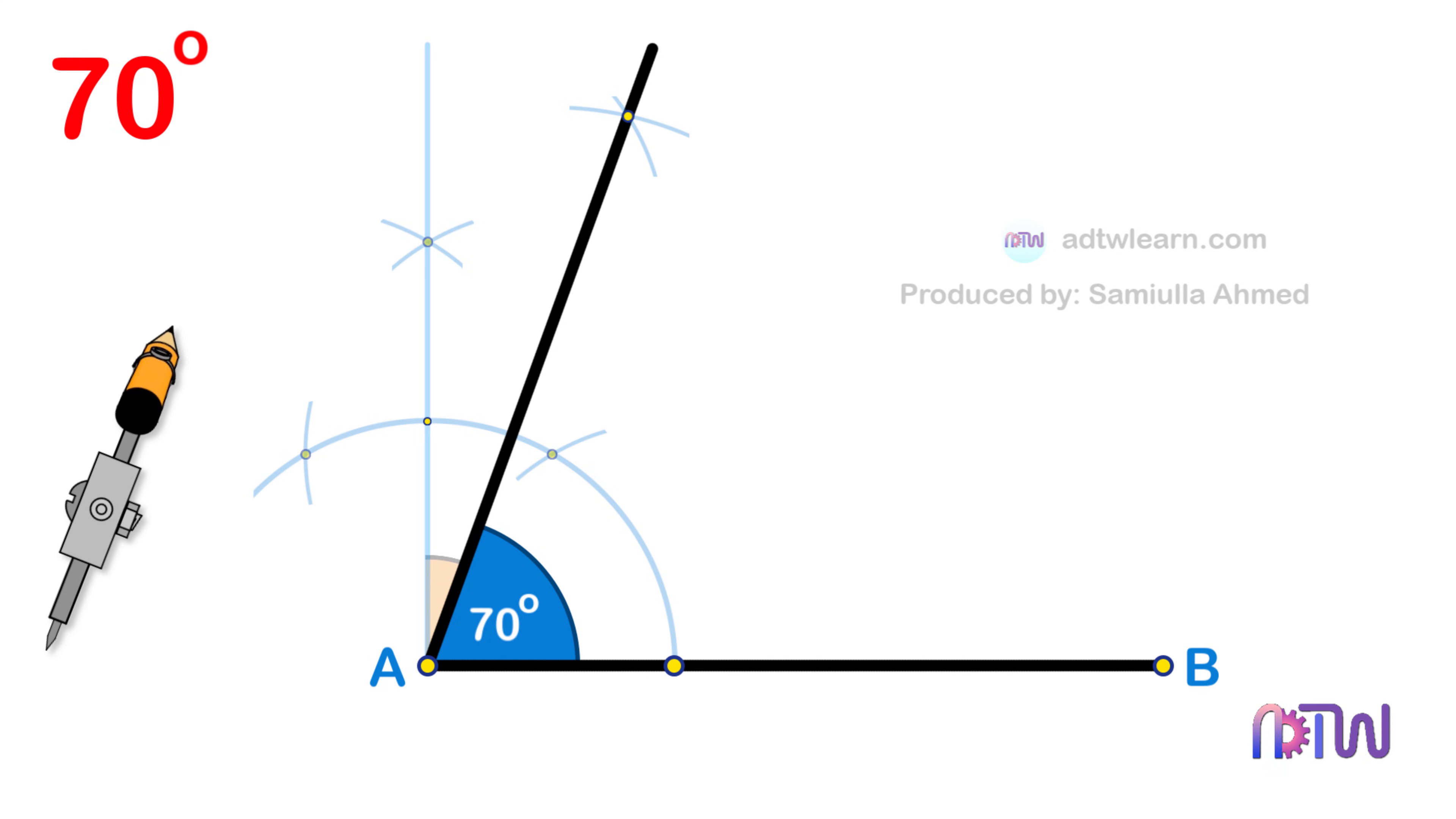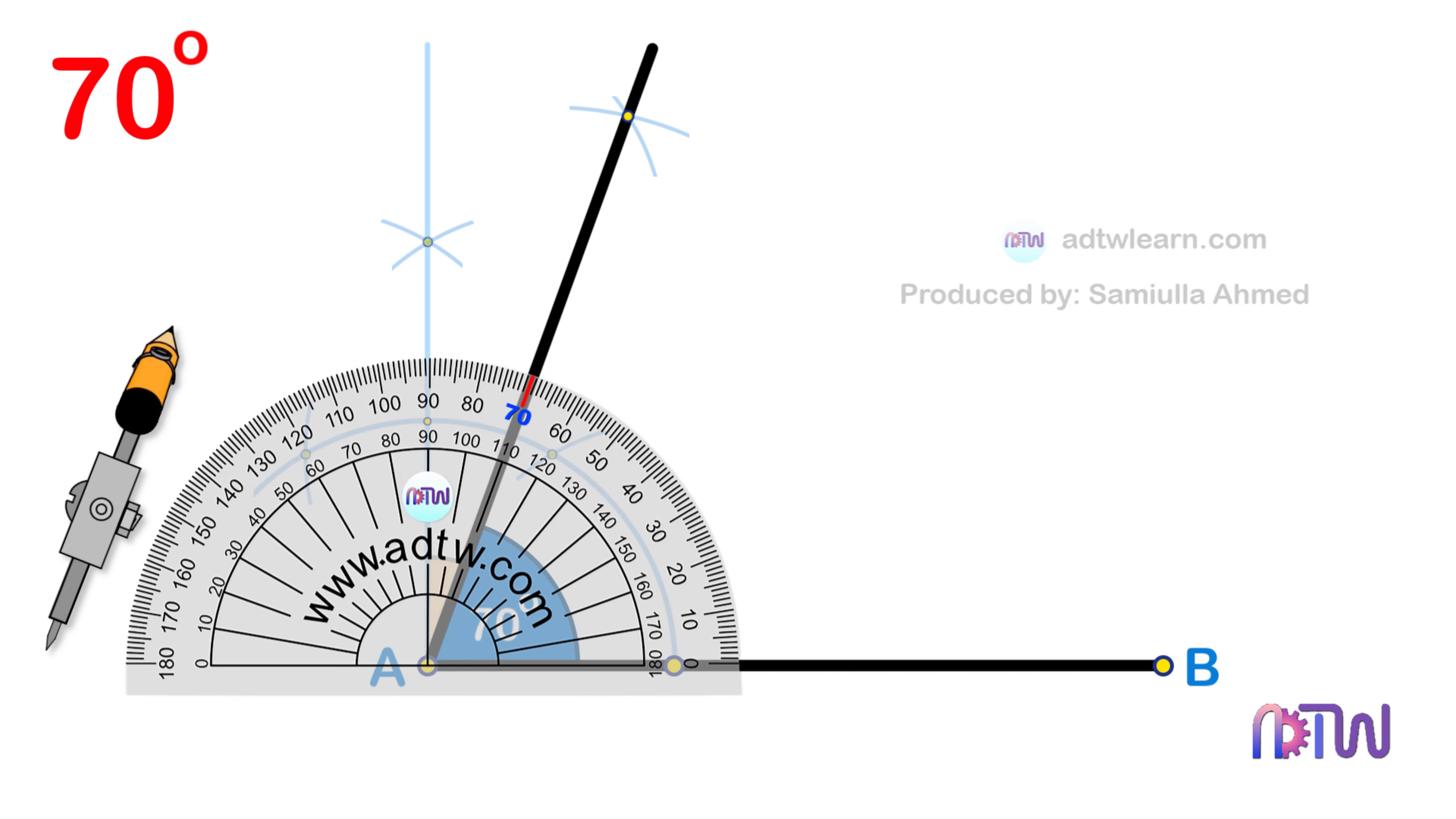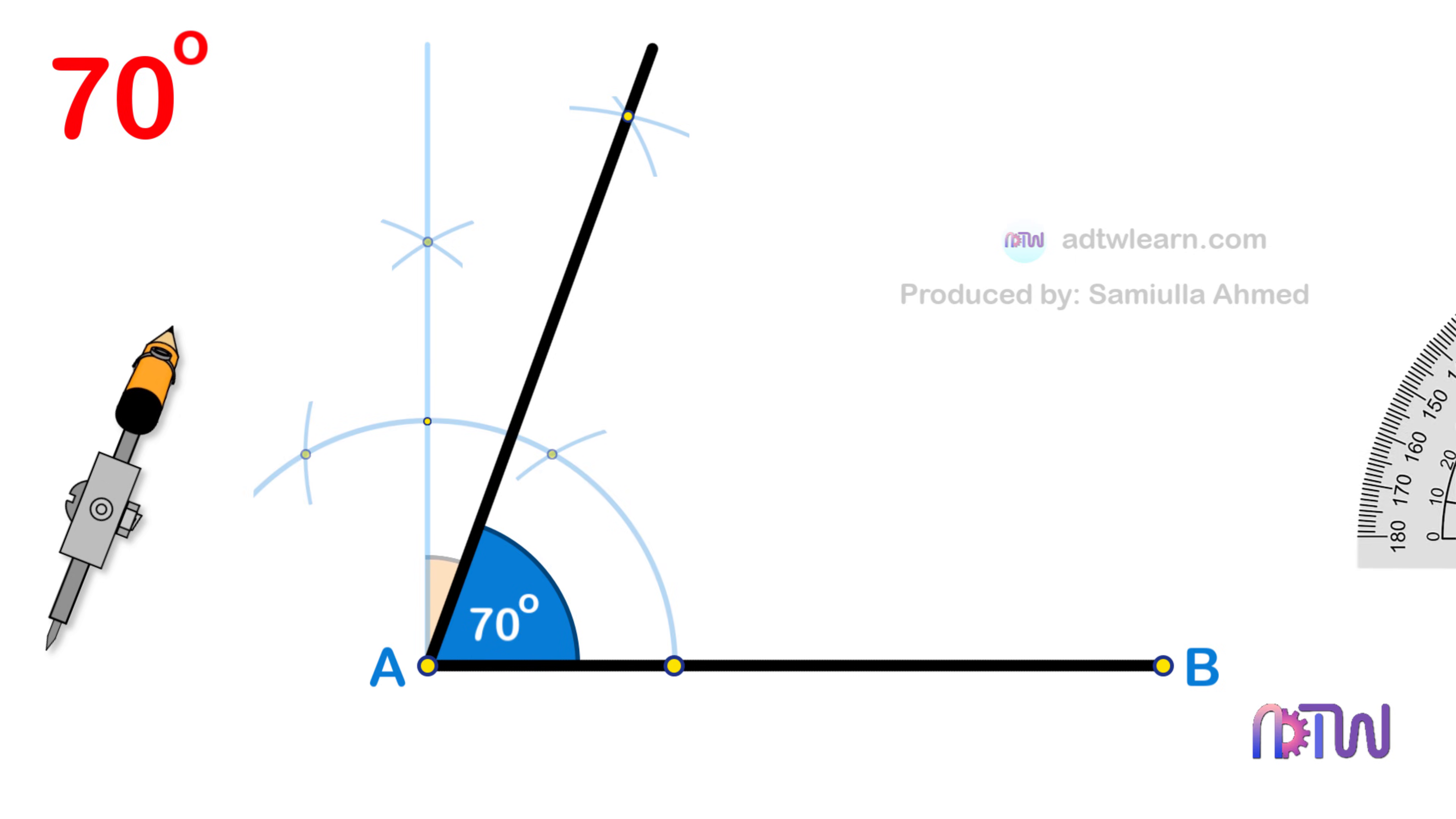You can cross check by using a protractor. I hope you have understood how to construct an angle of 70 degrees. If you liked this video, click on the like button, and if you are new to my channel, click on the subscribe button and turn on all notifications to get my latest videos.